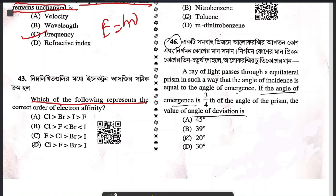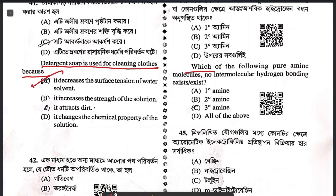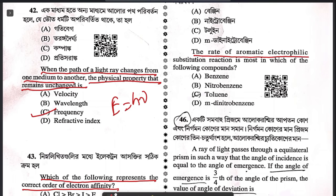Question 43: which of the following represents the correct order of electron affinity? Answer D — chlorine, fluorine, bromine, iodine. Chlorine has higher electron affinity than fluorine because of the small size of fluorine. Question 44: which of the following pure amine molecules has no intermolecular hydrogen bonding? A tertiary amine has no N-H hydrogen, so no intermolecular hydrogen bonding.